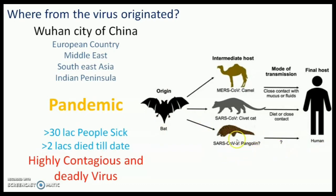Similar incidents have occurred earlier. The first was SARS-CoV, which occurred in 2002 in China, and more than 8,000 people were infected by this virus as well. The lethality rate was high but it was not that contagious. The intermediate host for this virus was a civet cat.